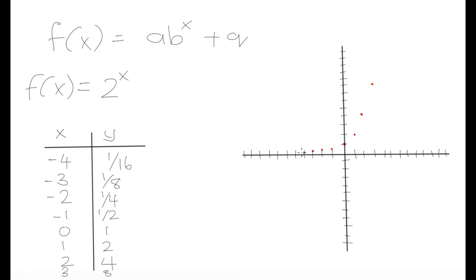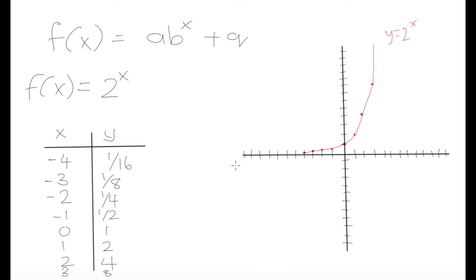If we join these dots together, we get a curve that looks like this — a smooth line in this shape. Looking at the negative x side, as we go into more and more negative x values, the graph is decreasing and approaching zero, but it's never actually going to touch zero. This line gets closer and closer to y = 0, which we call an asymptote. So this curve has an asymptote at y = 0.